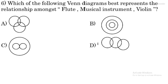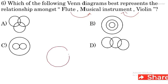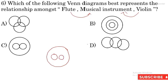Question 6: Which of the following Venn diagram best represents the relationship amongst flute, musical instrument and violin? The flute is a musical instrument and violin is also a musical instrument. So both flute and violin are subsets of musical instruments. C option is the right option for this question.